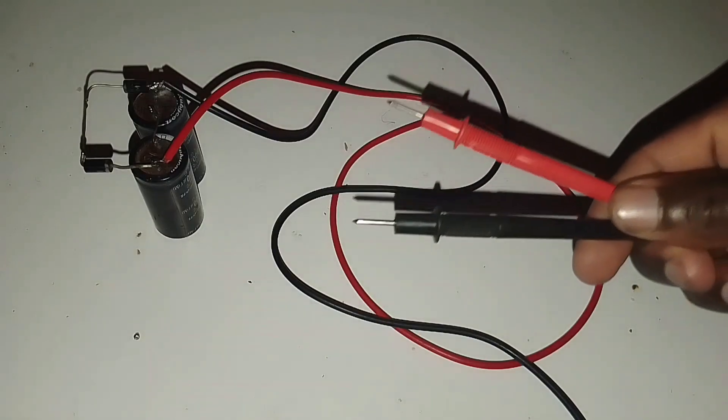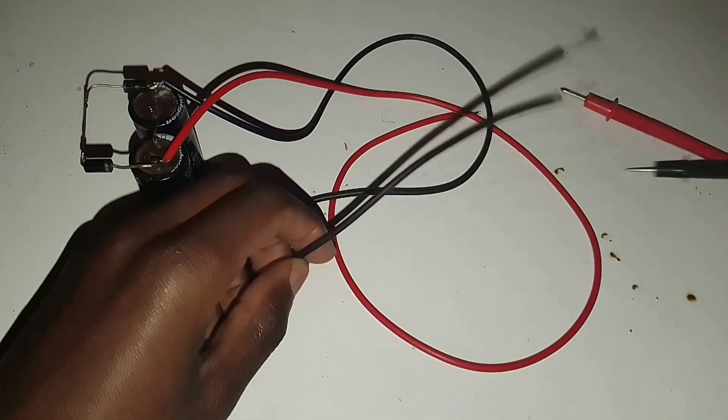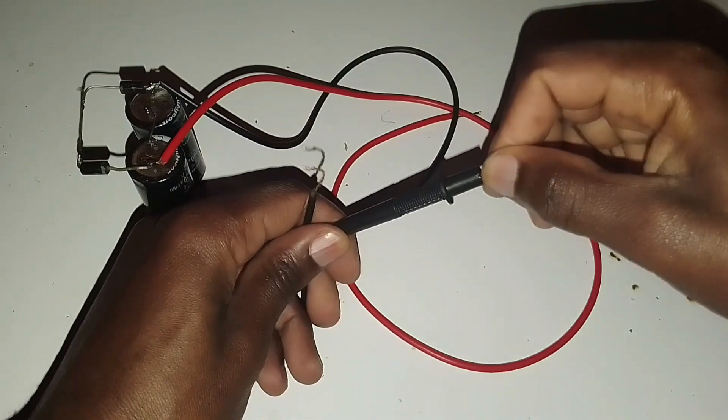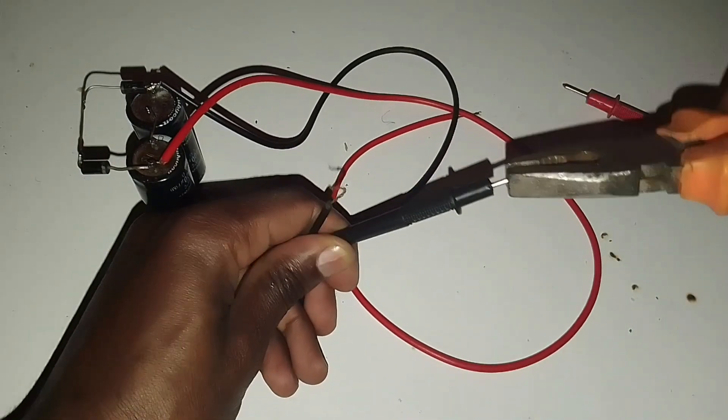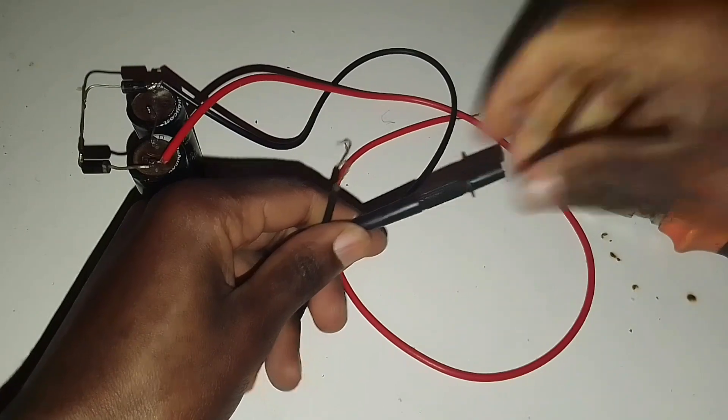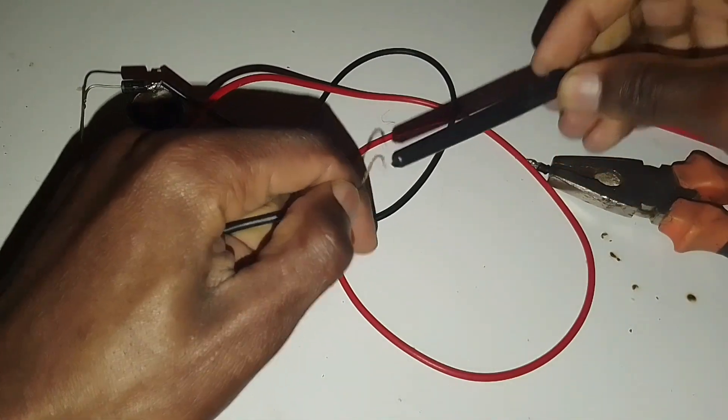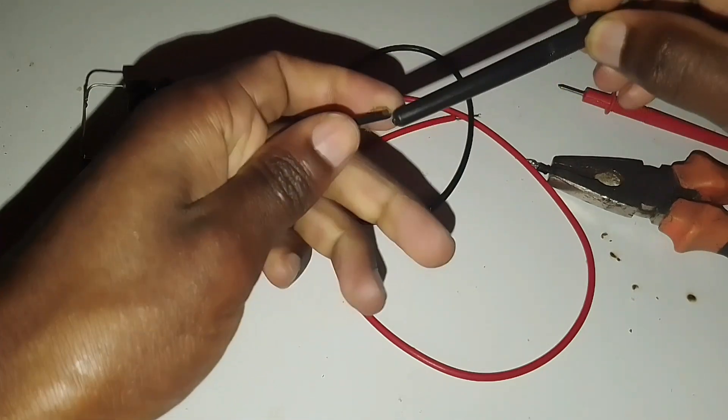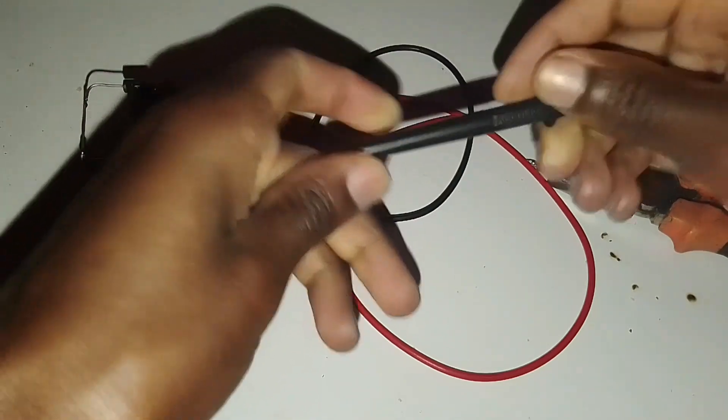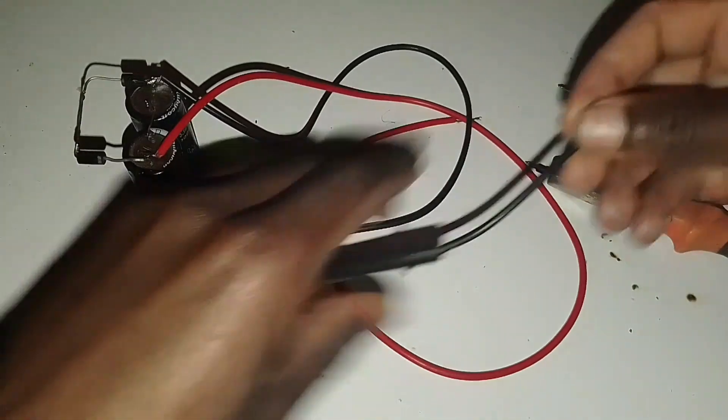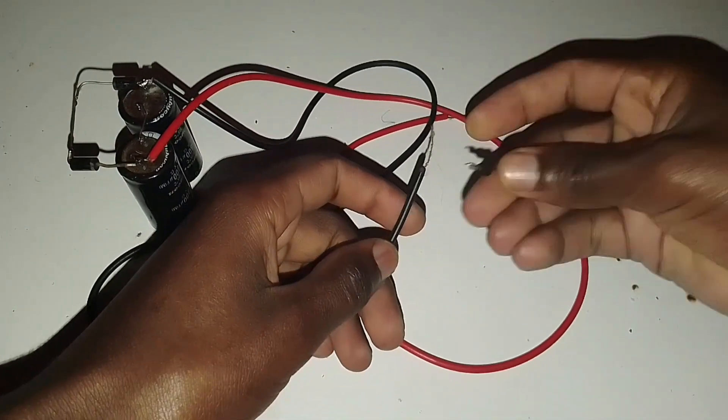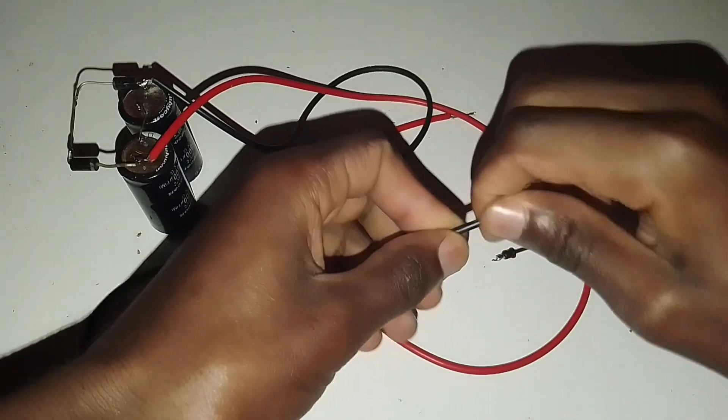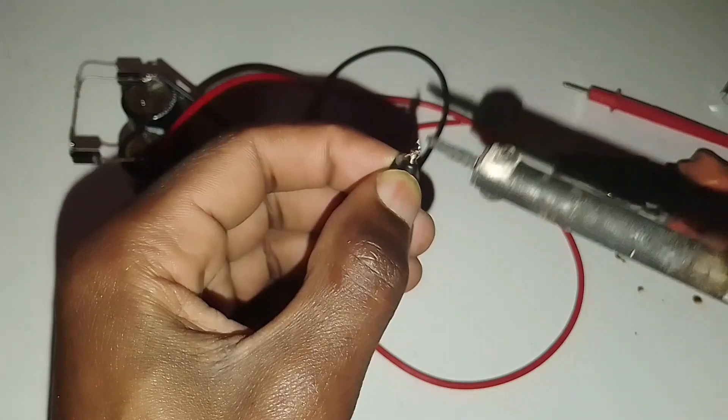Now here are the probes that we'll be using. I'll connect this to the negative wire here. First, remove this one, and once it's out here we can now connect it to this one. Let me solder this. Then I'll pull this back and insert this one.